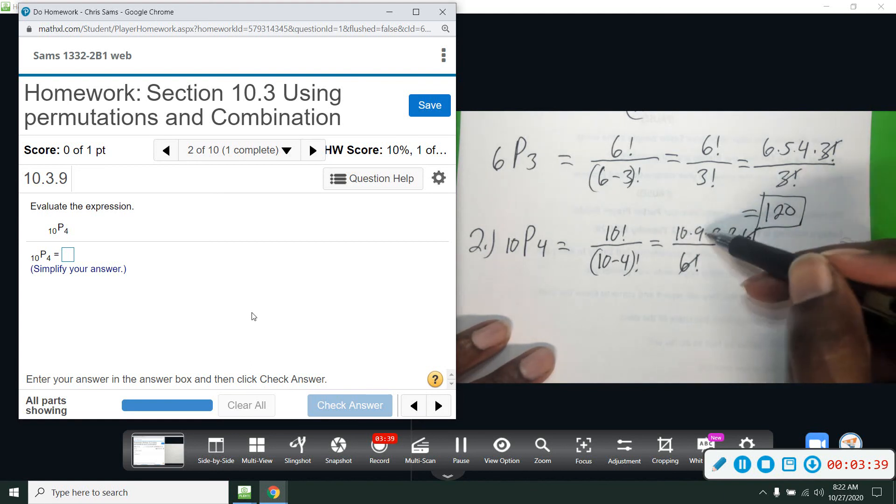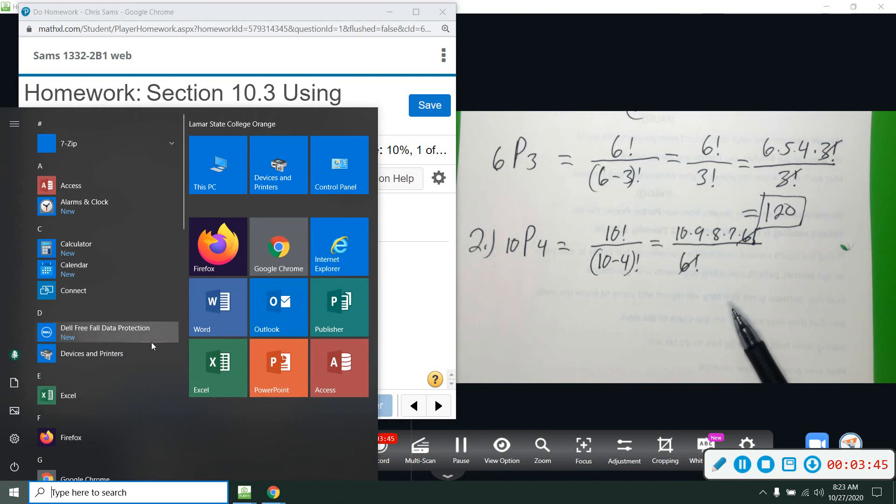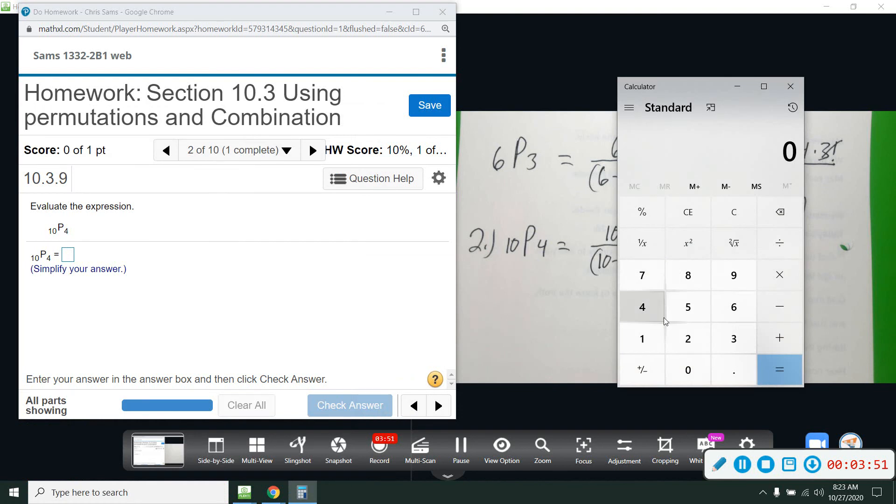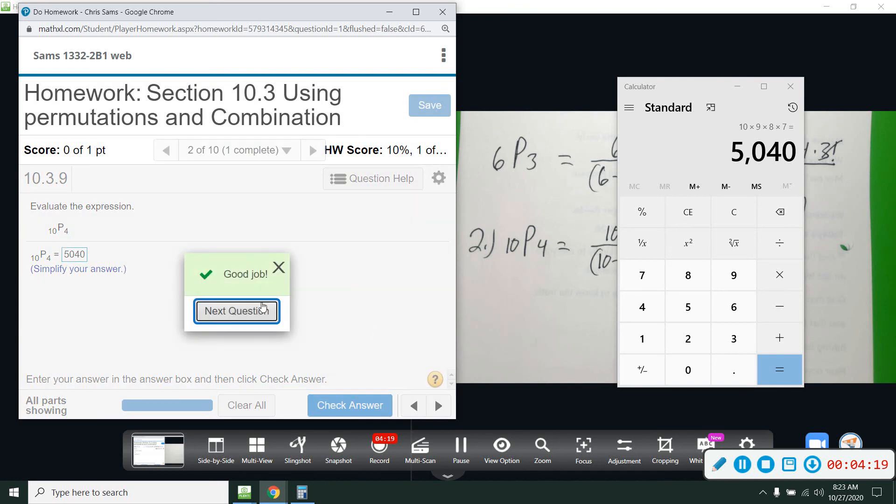Now we have to multiply 10, 9, 8, and 7. You can do it by hand, but it'll speed it up if we use the calculator. When you use the calculator, be sure to check. I'm going to type in 10 times 9 times 8 times 7 - I get 5,040. I'm going to clear it out and make sure I get the same thing, because it's easy to make a mistake. Usually if you get the same thing twice in a row, it'll help you understand that you've done it right. So 5,040.